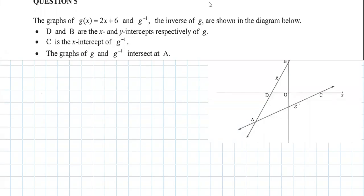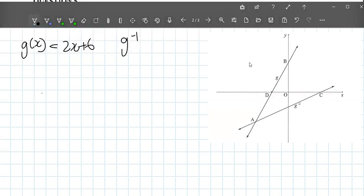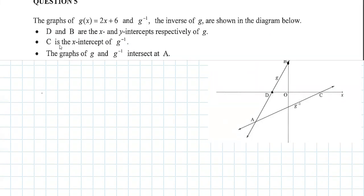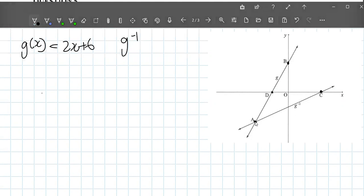This is the CAPS DBE November 2022 Paper 1, Question 5. The graphs of f equals 2x plus 1 and g, the inverse of x, are drawn in the diagram. D and B are the x and y intercepts respectively, so we have our x and y intercepts at D and B. C is the x-intercept of g, and they intersect at point A — so they cross each other at point A.